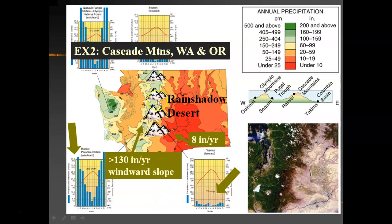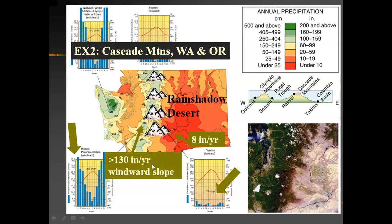Focusing on precipitation numbers and colors: the greens and yellows indicate a lot of precipitation. There's a weather station called Veneer with a monthly blue bar graph showing a lot of precipitation. On average, on the windward slopes of the Cascades in Washington and Oregon, they receive greater than 130 inches of precipitation per year — pretty much double what we get in South Louisiana. That's a great example of abundant orographic precipitation.